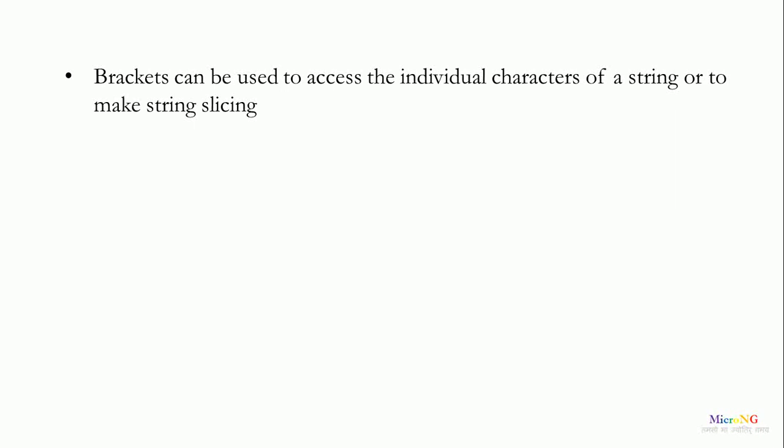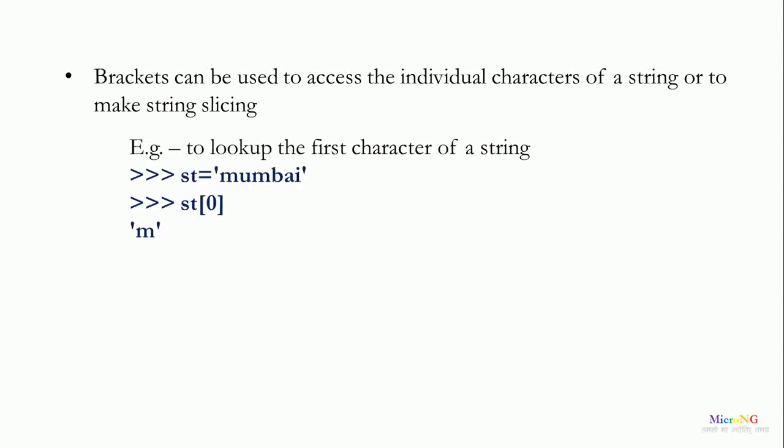Brackets can be used to access the individual characters of a string or to perform string slicing. In this example, we have created a string named st with the value 'Mumbai'. To access the first character of the string, we use st bracket 0, where 0 indicates the first character index. If the second character is to be displayed, we can write st bracket 1.